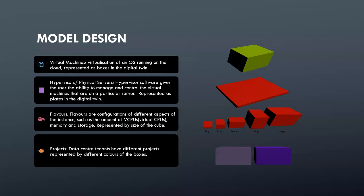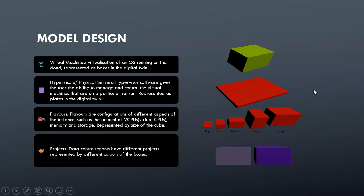Next I'll talk about the model design — the way we are designing different aspects of the model. The virtual machines are represented as boxes in the digital twin. The hypervisors and physical servers are represented as plates. Flavors, which are configurations of different aspects of an instance such as the amount of vCPUs, memory, and storage, are represented by the size of the cube.